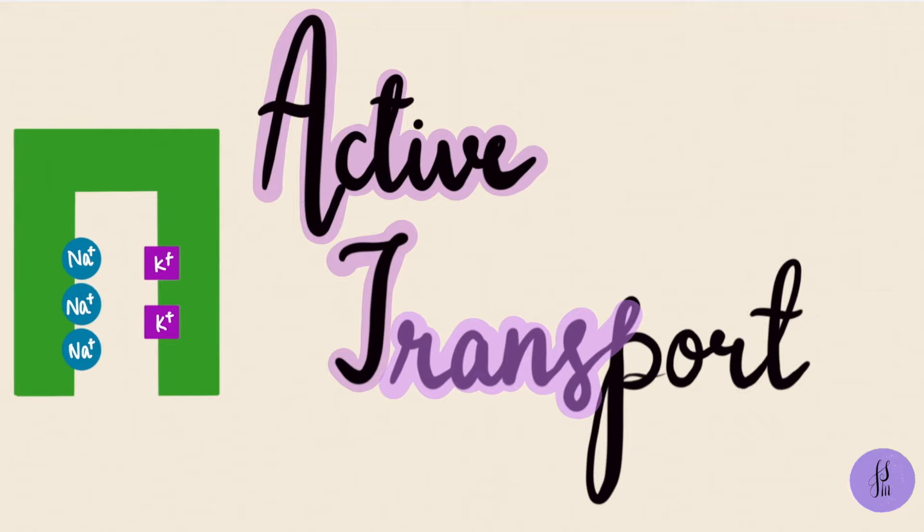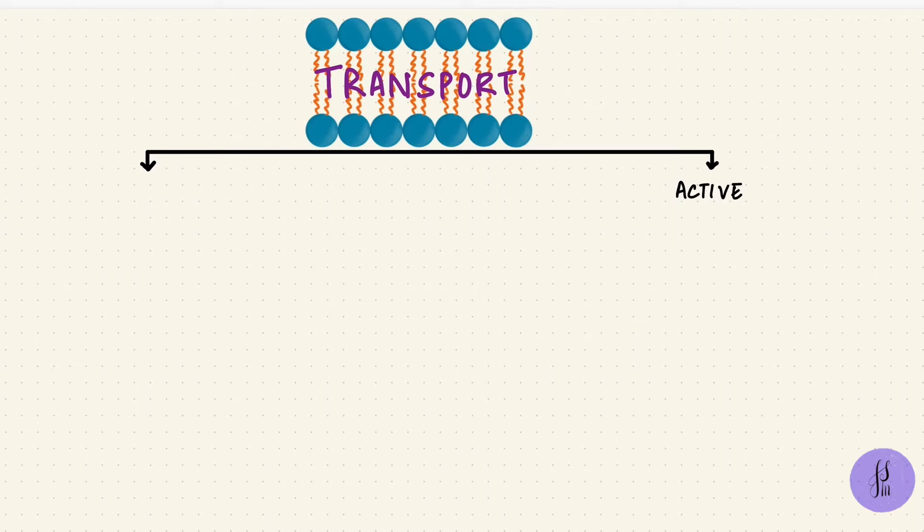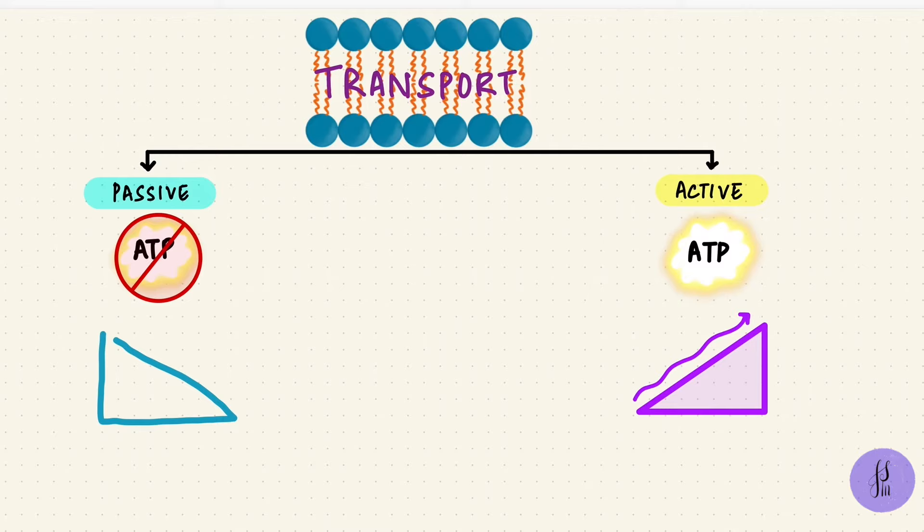Transport across the cell membrane could be active or passive. Active transport uses extra metabolic energy in the form of ATP while passive does not. That's because active transport is movement against an electrochemical gradient from low to high, versus in passive transport the solute moves along its gradient from high to low. So it's like pushing a boulder up a hill versus down a hill. Uphill needs more energy and that energy is in the form of ATP.